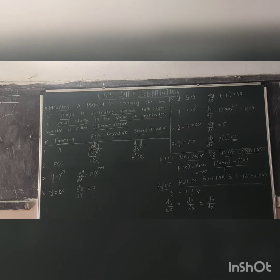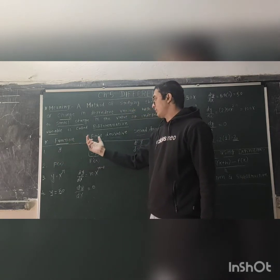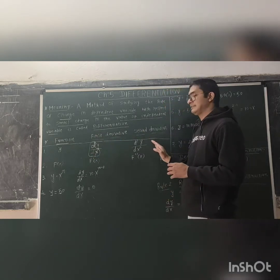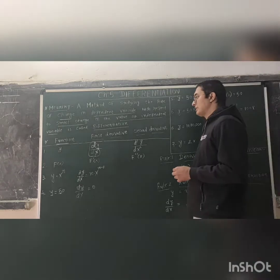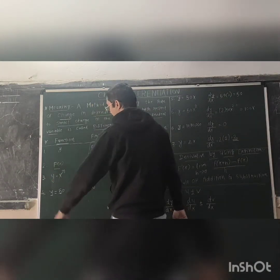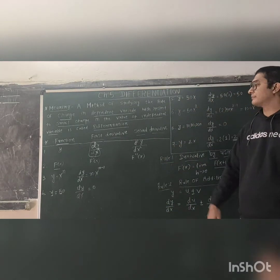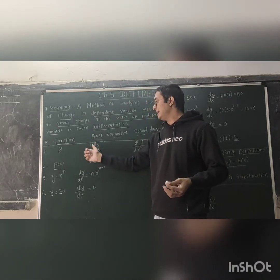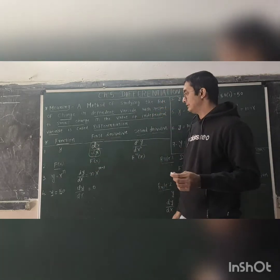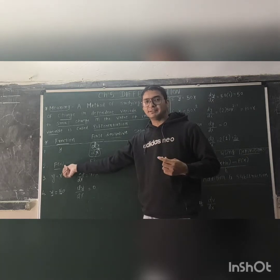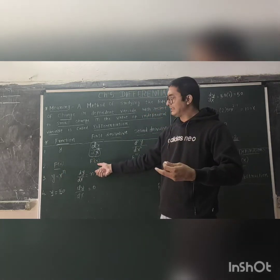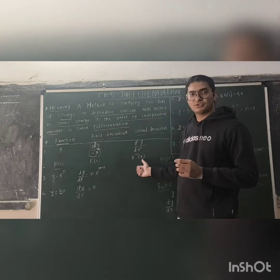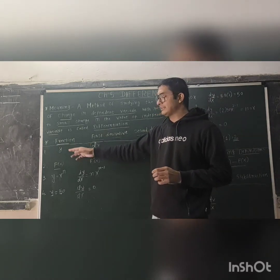So here Y is the original function for which we have applied the techniques of derivatives. DY/DX is the first derivative and D²Y/DX² is the second derivative. Now if the function is written as F of X, then we cannot write it as D into F(x) upon D of X — that is wrong. If the function is F(x), then the first derivative is called F dash X, and the second derivative is F double dash X. These are the two types of derivatives frequently used in questions.